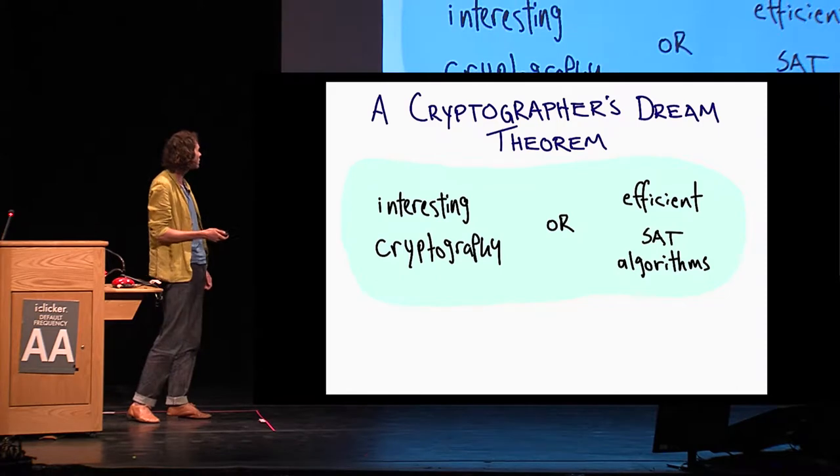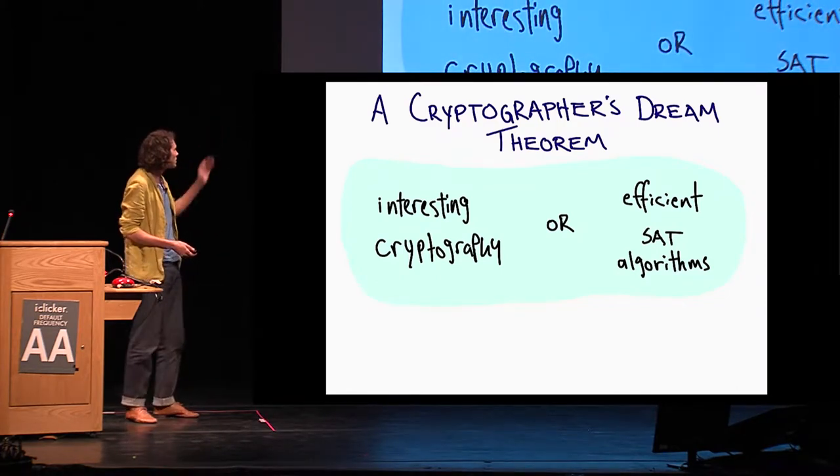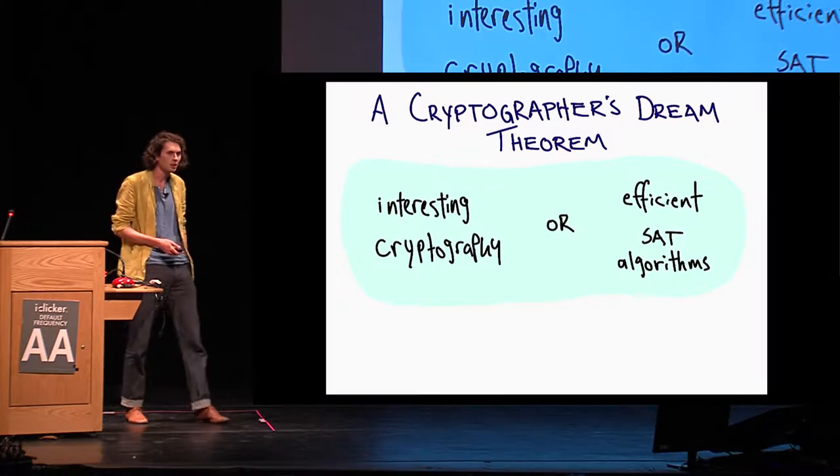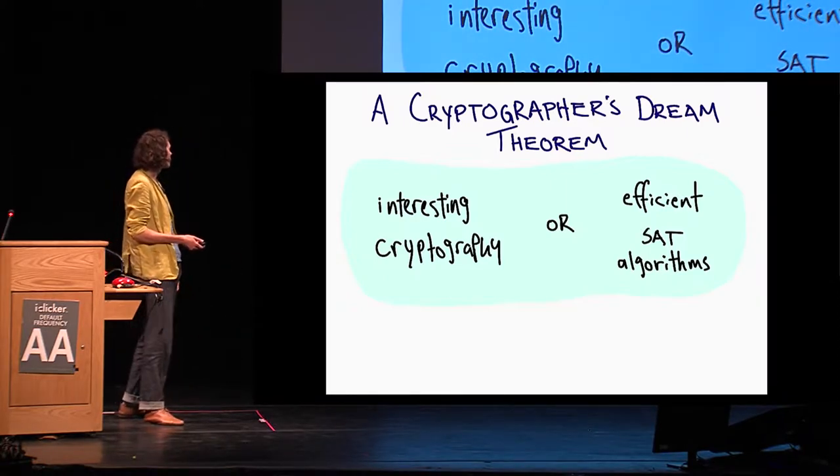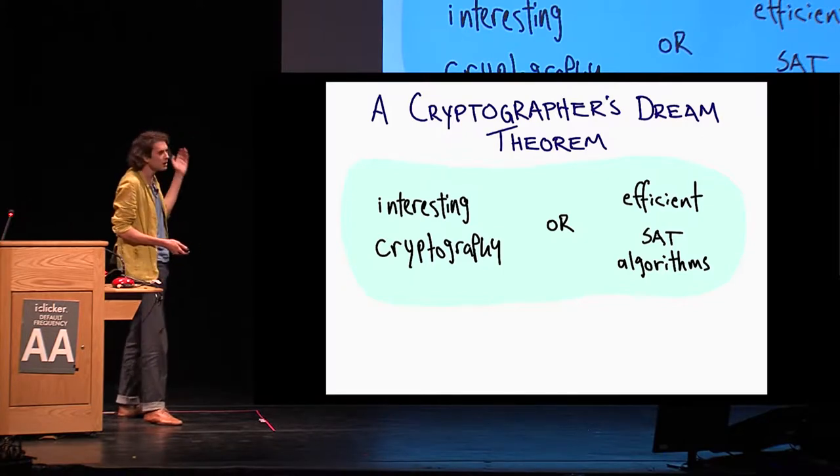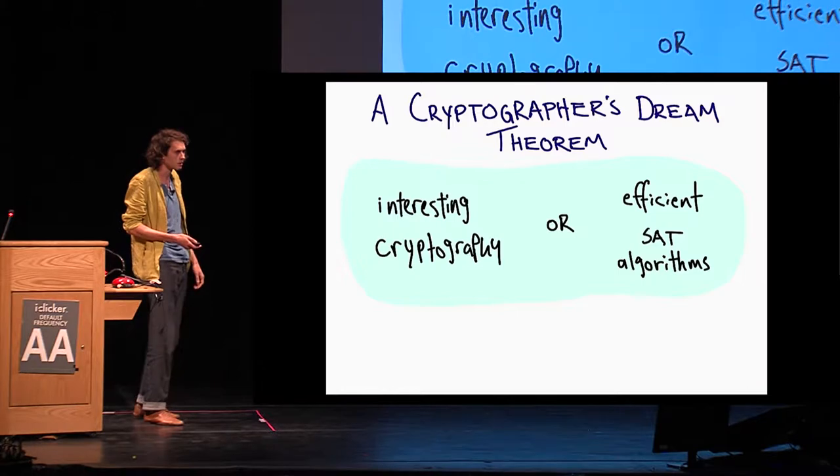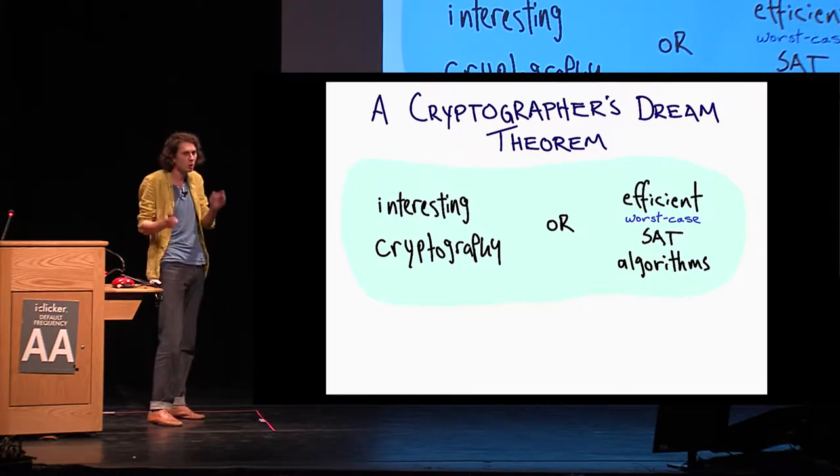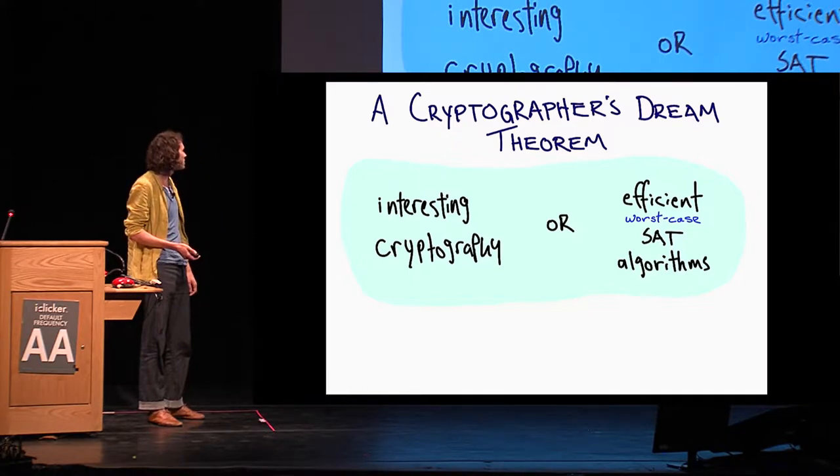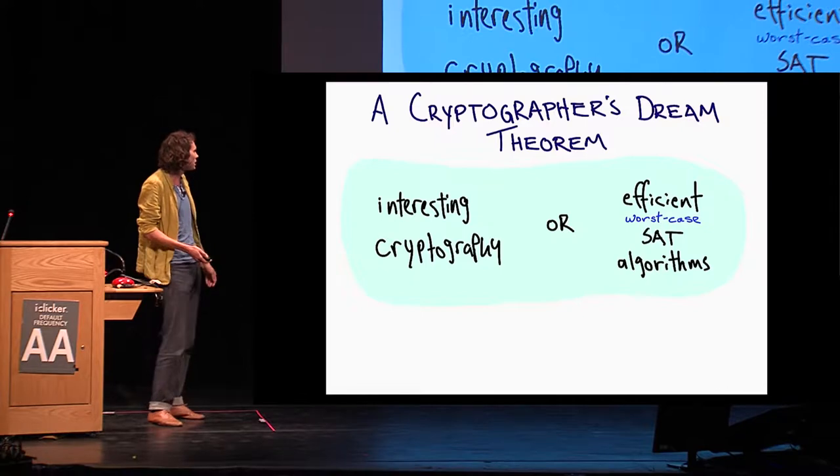So what do I mean exactly? This is the sort of win-win that's on the screen here, the sort of thing that naive grad students such as myself dreams of proving. A theorem statement of the form: we can either have interesting cryptography or efficient SAT algorithms. Well, you may say we have efficient SAT algorithms, efficient worst-case SAT algorithms. Why do we want a win-win like this?